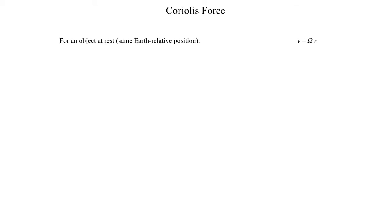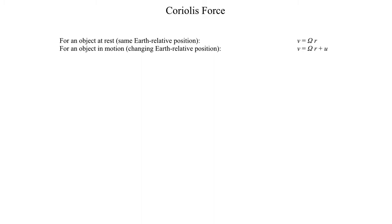To get a mathematical bearing on what is going on here: if you have an object at rest — same earth-relative position, staying at the same latitude, longitude, and height above the ground — then the only velocity you have to account for is just the velocity of the body you're on. That would be the angular velocity of the earth, omega, times your distance from the earth's rotational axis, r. However, if you're an object in motion, you also have to account for your own velocity relative to earth, represented by u. Note that v is not meridional wind and u is not zonal wind — I just want to make sure there's no confusion on that.